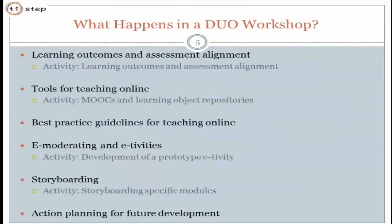So what do we talk about in the DUO workshop? This matters because I'm trying to highlight the kinds of things you're going to have to consider if you're moving online. The first thing is we get everybody to start off by talking about basic pedagogy in terms of Bloom's learning outcomes. Quite often people inherit modules and just reuse the learning outcomes they've been given, or maybe they wrote learning outcomes under a bit of pressure and haven't really had time to think about whether they can actually achieve those outcomes in the module.